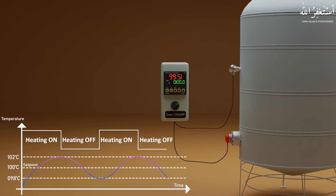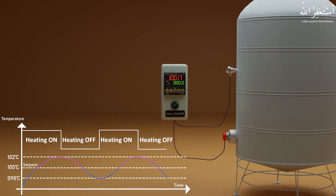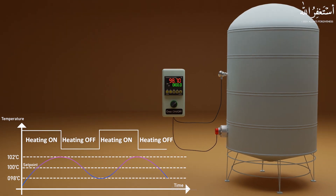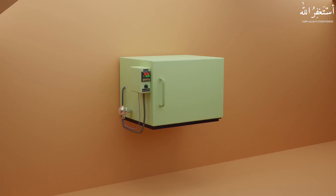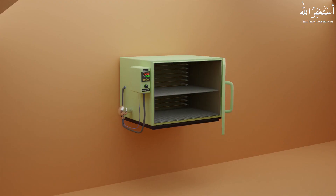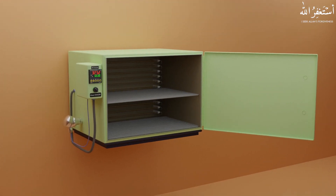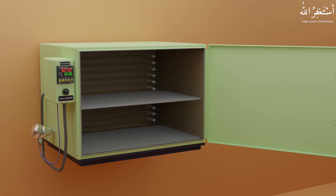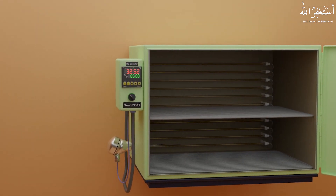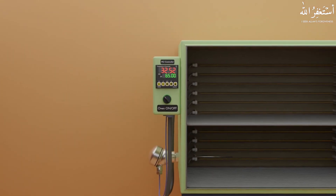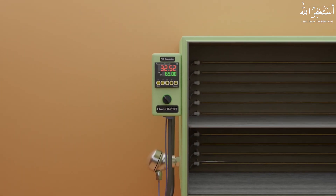For more precise control of the process variable, we can use a PID controller with analog output. Let's see an example where we have to keep the temperature at 65 degrees in an industrial oven. We will set the setpoint in the PID controller as 65 degrees.